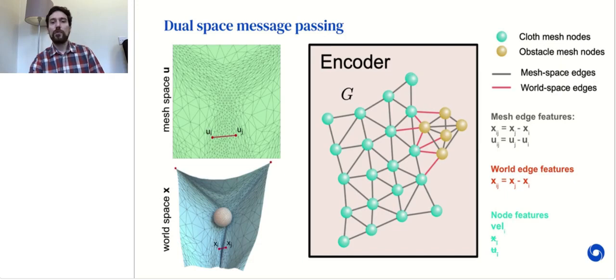Crucially, like in our previous work, we do not add absolute node positions as node features. Instead, the relative positional features in the edges make the model fully local and translationally equivariant, which is key for data efficiency and generalization to larger scenes.